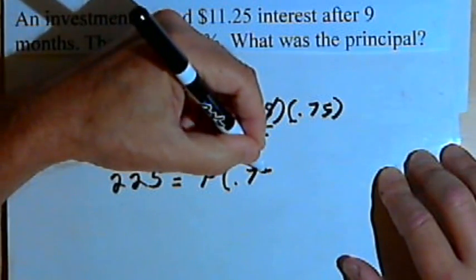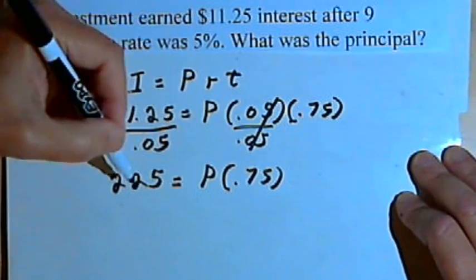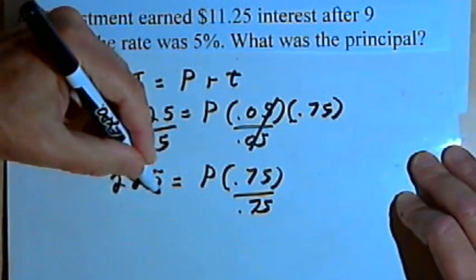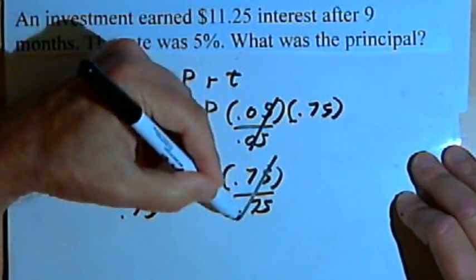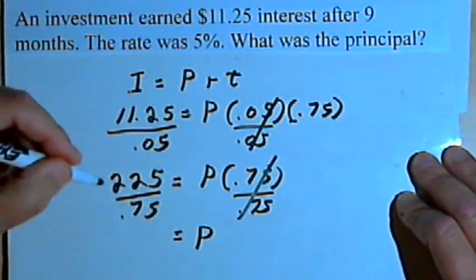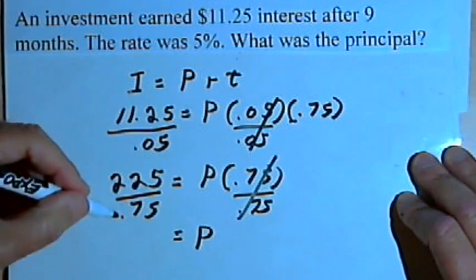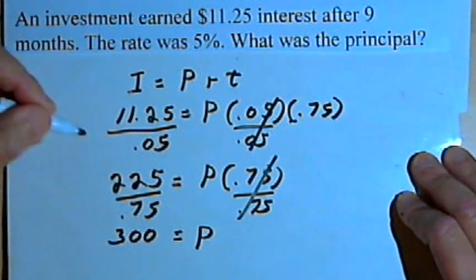I've still got this 0.75. So now we'll just divide both sides of the equation by 0.75. The right side of the equation is going to just be P, and 225 divided by 0.75, if we use a calculator for that, we find that it equals 300.